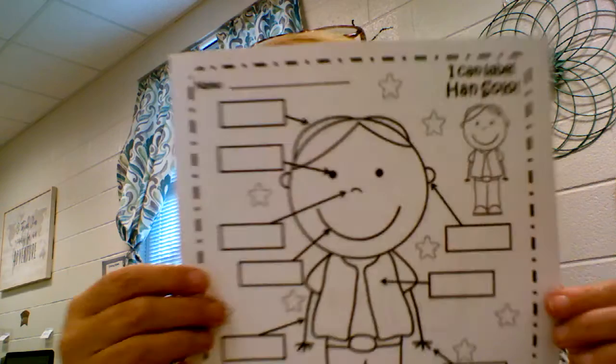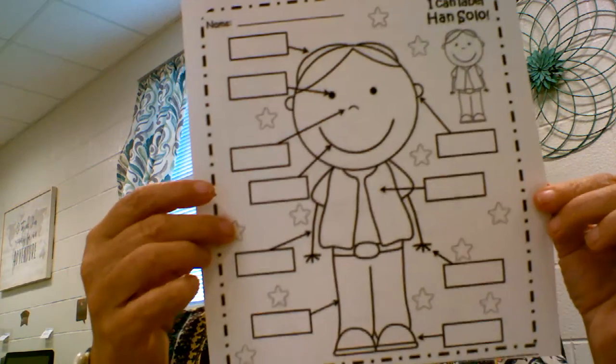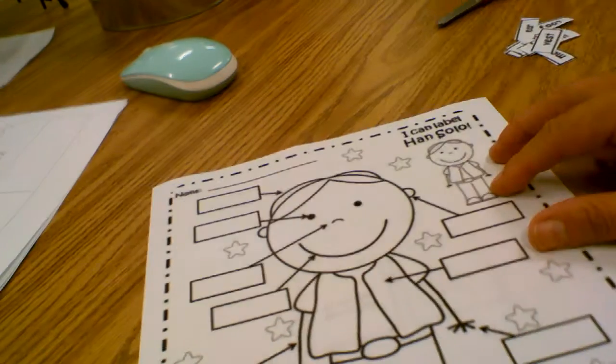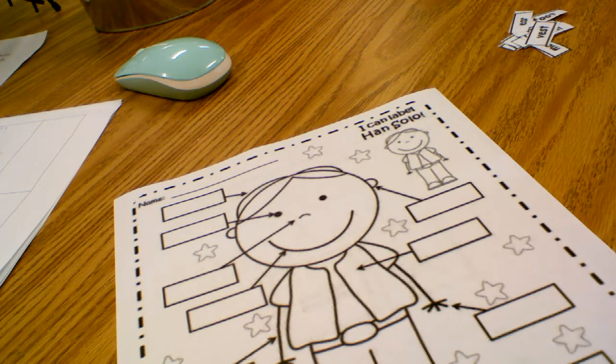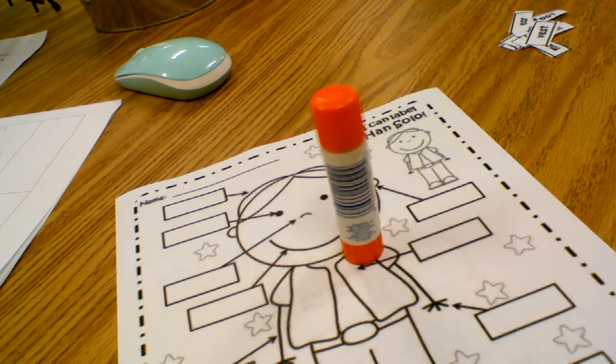Alright, so we're going to do this sheet right here, and it's labeling the body parts. Okay, so let's look right down here. We need scissors and we need glue.